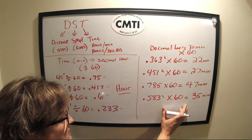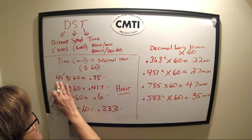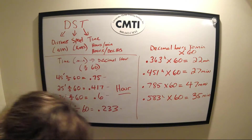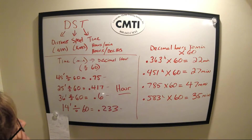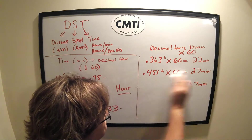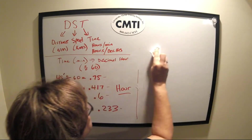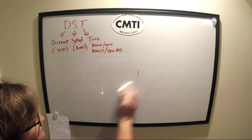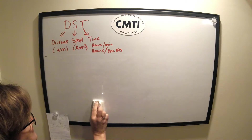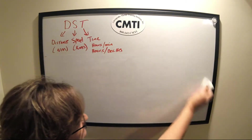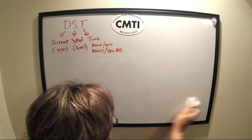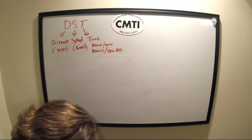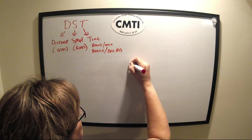There will be times when you convert a decimal into minutes, and other times when you convert minutes into a decimal — both are needed to do our DST calculations. Let's clear this off and talk about the DST triangle. Some places use 60 D Street; it's all very similar. We prefer the DST triangle because it works when you're going past an hour, so you don't have to relearn another method.